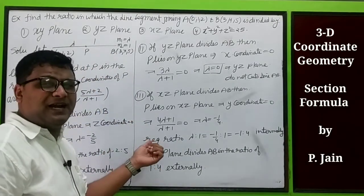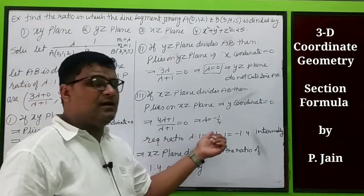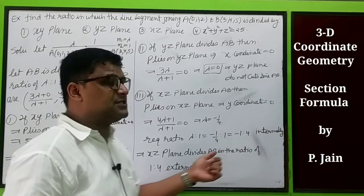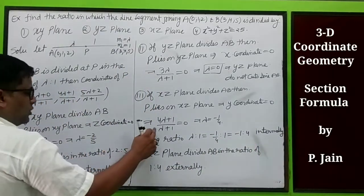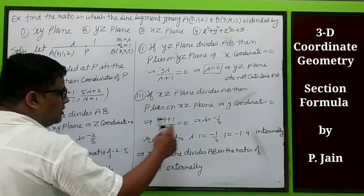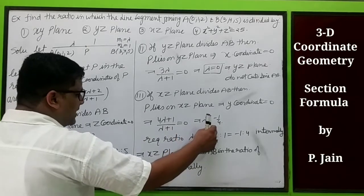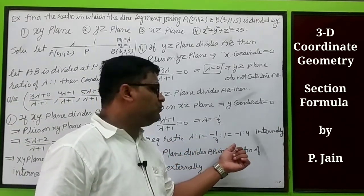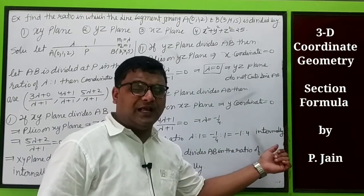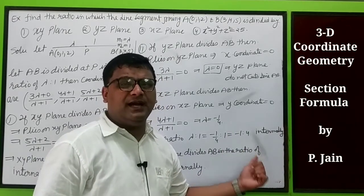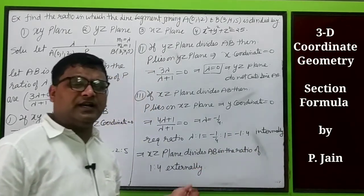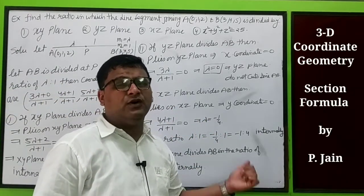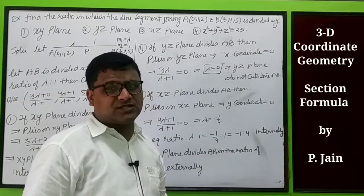Third case: if the xz-plane divides AB, then P lies on the xz-plane, so y-coordinate must be 0. Then (4λ+1)/(λ+1) = 0 gives λ = -1/4. The required ratio is -1 is to 4 internally. Removing the minus sign, it is 1 is to 4 externally. Thus the xz-plane divides it in the ratio 1 is to 4 externally.